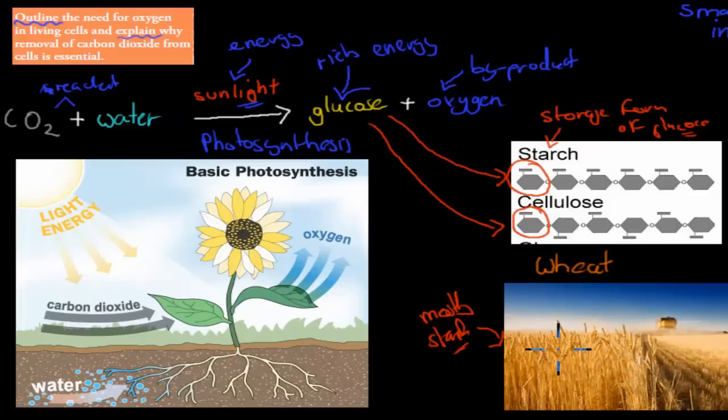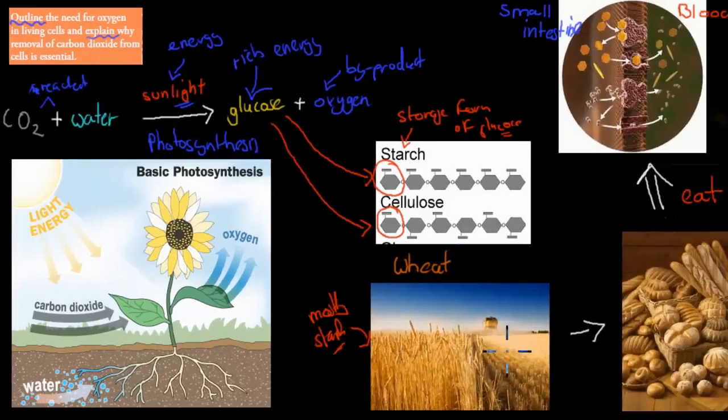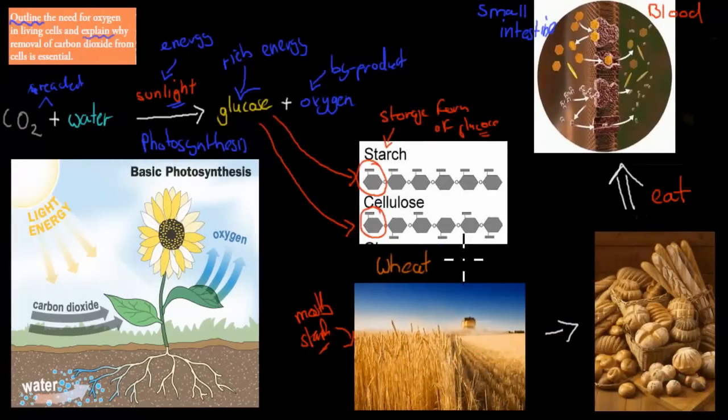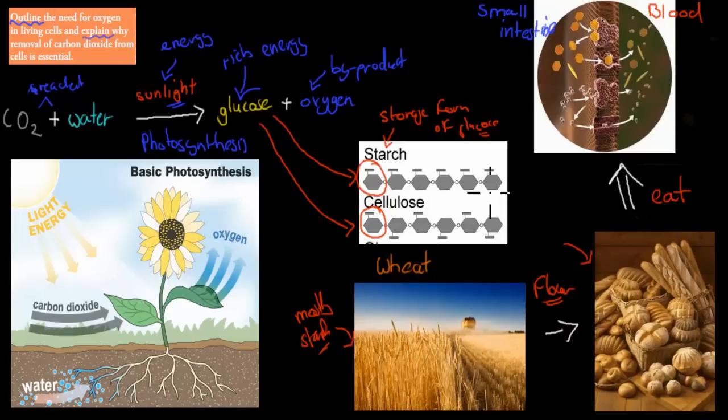Now we can use that starch. We can use that wheat and we can use that starch to make different things. For example, we can make flour. So we can make flour out of that starch. And that flour, we can use to make bread. So now we have food that we can eat. We've used this storage form of glucose in plants called starch. We've used that to make our own food, which in this case is bread. So the bread is food for us. And the bread we can eat.